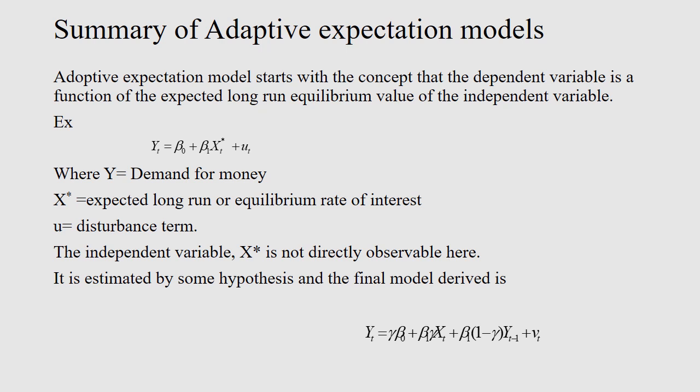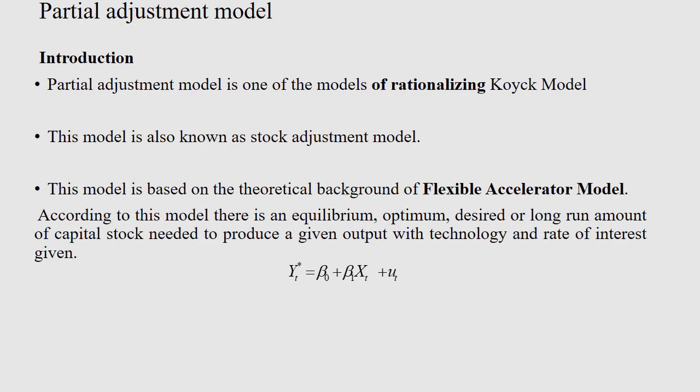The drawbacks of the Koyck model are clear to you. Let me explain briefly the adaptive expectation model, so you will understand the difference in the method of rationalization between the adaptive expectation model and the partial adjustment model. The adaptive expectation model starts with the concept that the dependent variable is a function of the expected long-run equilibrium value of the independent variable. The example we have already discussed is: yt = beta_naught + beta_1 * xt_star + ut, where xt_star is the expected long-run or equilibrium rate of interest.